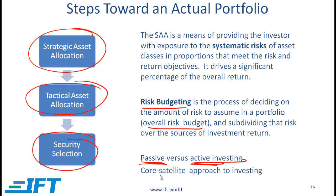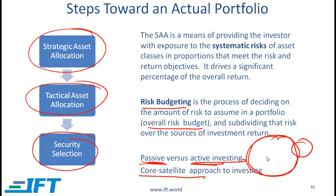There is an investment approach called the core-satellite approach. You divide your portfolio into two parts: the core part, managed passively by putting most of the money in an index fund taking only systematic risk, and the satellite part, which is actively invested in stocks believed to be undervalued. A combination of these two is referred to as a core-satellite approach to investing.